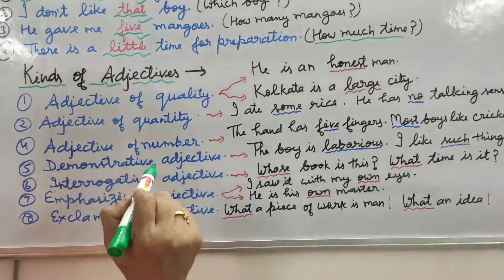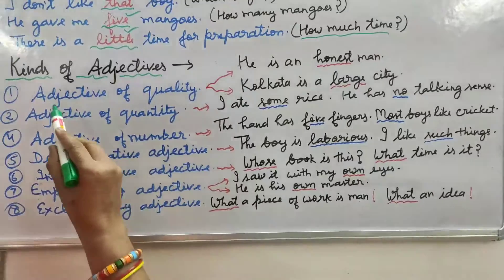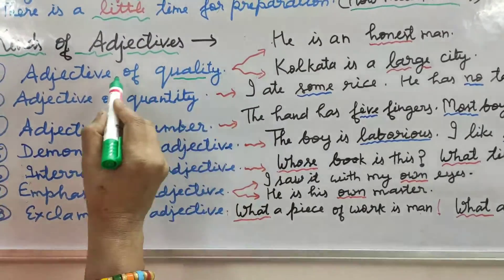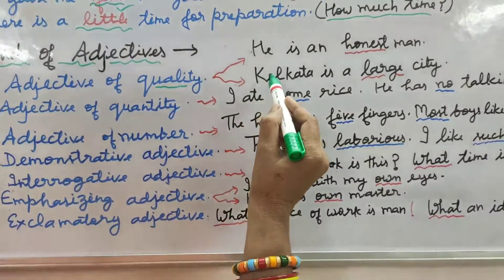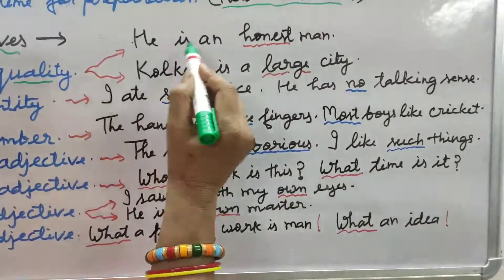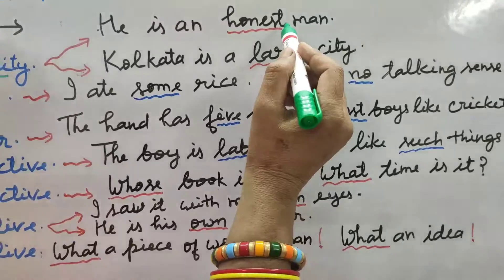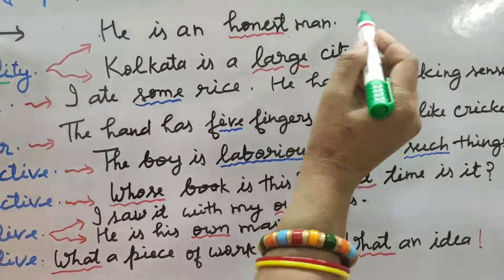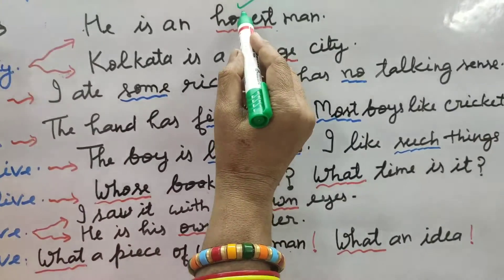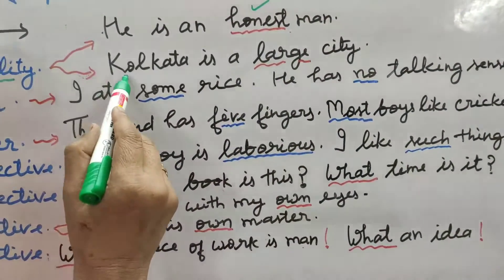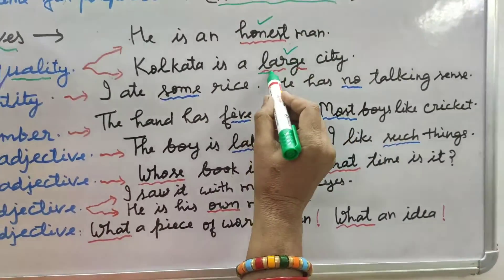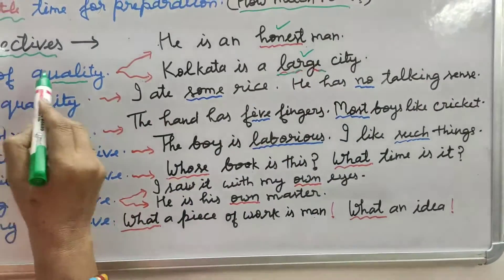Now I am reaching towards the kinds of adjective — adjective kitne prakaar ke hote hain. Number one: adjective of quality. To show the quality, we use this adjective. Example: 'He is an honest man.' What kind of man? Honest man. So here the word 'honest' is the adjective of quality. 'Kolkata is a large city.' Which type of city? Large city. So here 'large' is the adjective of quality.